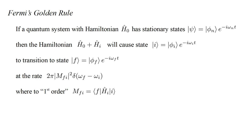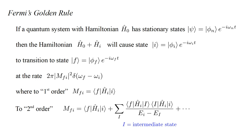To second order, we add the sum over all intermediate states of the product of first-order matrix elements between the initial and intermediate states, and between the intermediate and final states, divided by the energy difference between the initial and intermediate states.